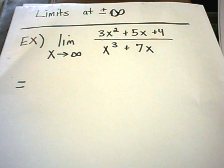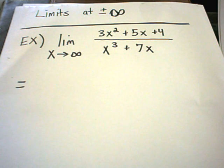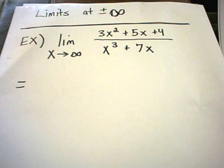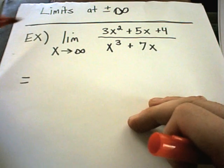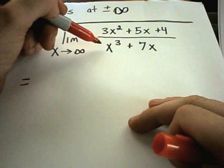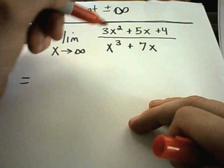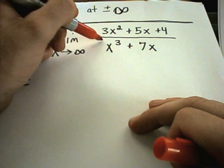In these problems, limits at infinity I like a little bit better, only in the sense that they're a little more straightforward — the basic ones are a bit more mechanical. Just like anything in math, there's definitely variations on this theme. But when you have a rational function — that's a polynomial over a polynomial — you always look at the highest power of x in the denominator.